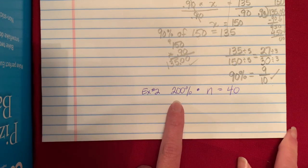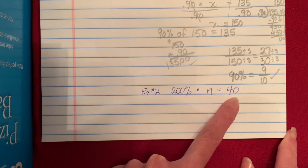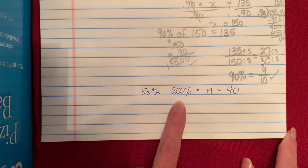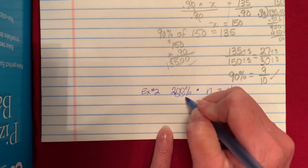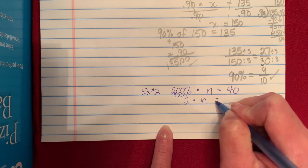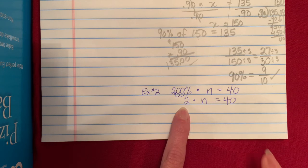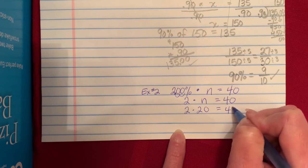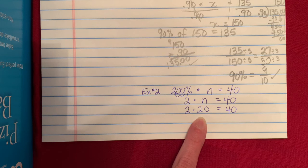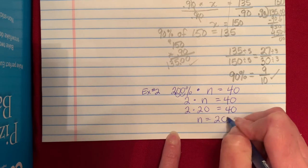So looking at example two from lesson 6.6, we have 200% times N equals 40. So again, we're going to take and make that percent a decimal. Move our decimal point two places to the left. We have 2 times N equals 40. And we know what we multiply 2 by to get 40. We multiply by 20. 2 times 20 equals 40. So our number would be 20. We can always use our mental math skills to figure some of these out as well.